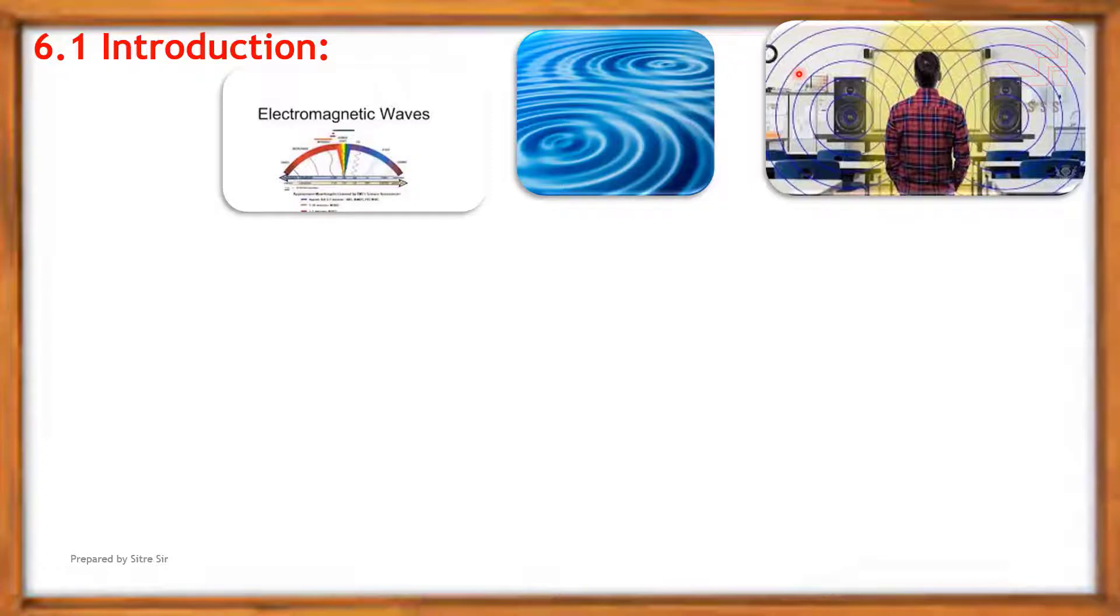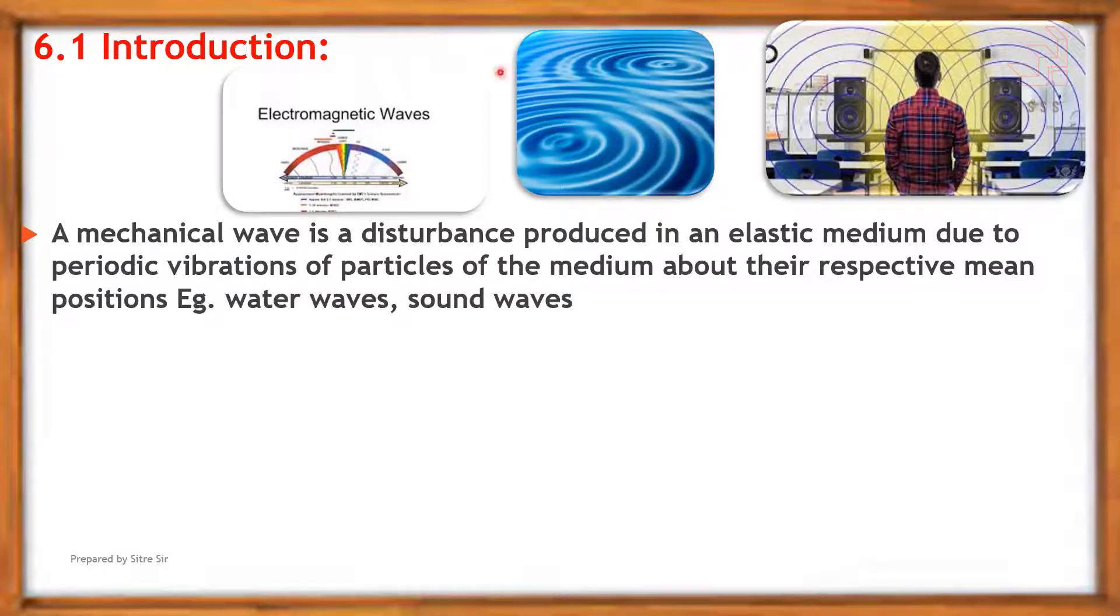First one is mechanical wave. A mechanical wave is a disturbance produced in an elastic medium due to periodic vibrations of particles of the medium about their respective mean positions. This is a periodic disturbance in an elastic medium where the medium particles vibrate. For example, water waves and sound waves are mechanical waves.